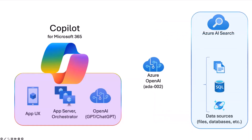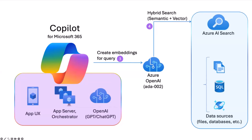Once your data is available for searching, we create embeddings for our query. When a user sends a prompt to Copilot, we convert that data to embeddings and make a hybrid search, then return data — whether it's text, document, image, or video. We are building a search experience where the exact keyword is not critical; we use hybrid search to retrieve relevant data based on similarity, not just the keyword itself.